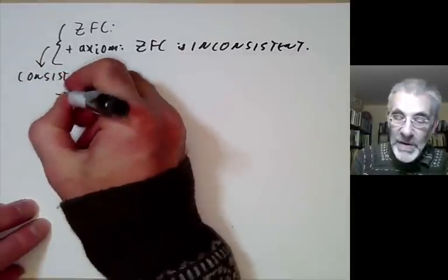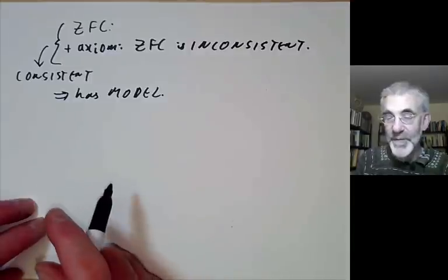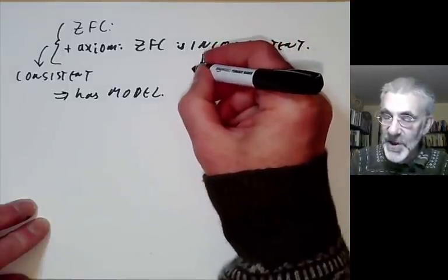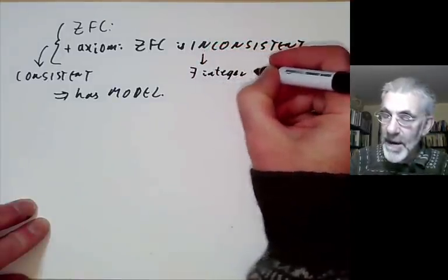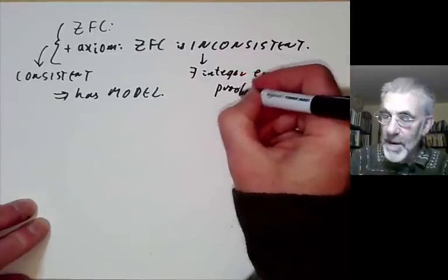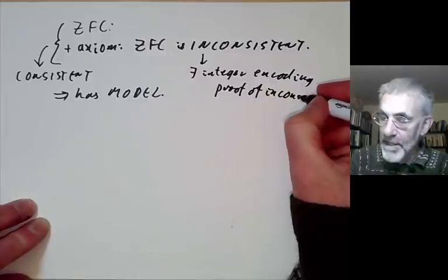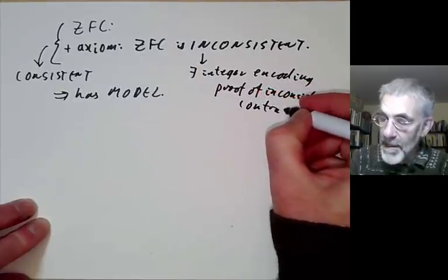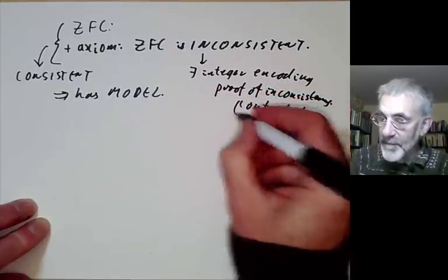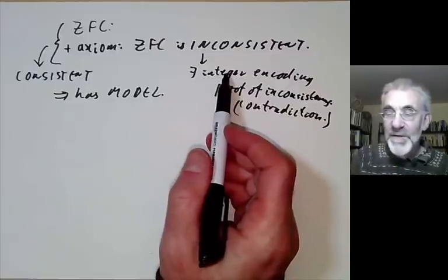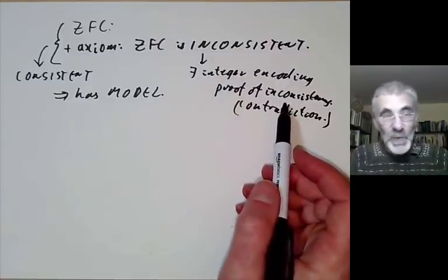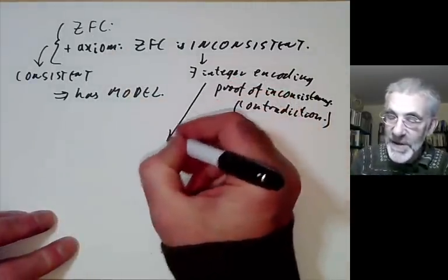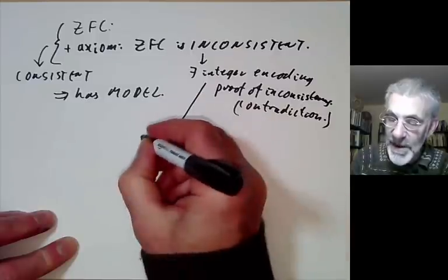Therefore it has a model by Gödel's completeness theorem. What does it mean to say ZFC is inconsistent? Well, it means there's an integer encoding a proof of inconsistency — in other words, an integer encoding a contradiction in ZFC. That's a problem, because if you've got an integer encoding a proof of inconsistency, you could just write out that proof and obtain a contradiction. Well, it turns out this integer is not really an integer at all — it's non-standard.